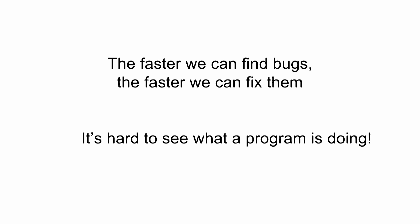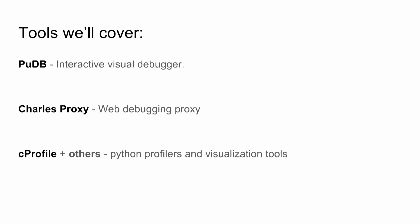Here are the three tools we'll cover. The first two will be in more detail. PuDB is an interactive visual debugger — it's very similar to PDB and IPDB, other Python debuggers. The second one is called Charles proxy, which is not related to Python at all — I just love it for web stuff; it's a web debugging proxy. The last one is cProfile, which covers profiling in general and different tools.